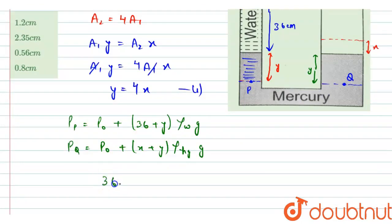And I can directly write this as 36 plus y can be replaced by 4x into rho of water into g equal to x plus 4x, that is 5x, into rho of Hg into g. So the g term will also cancel out.